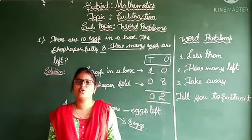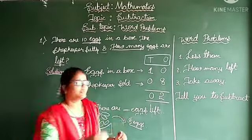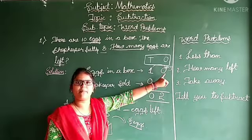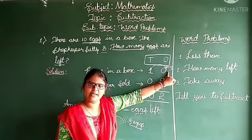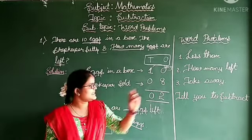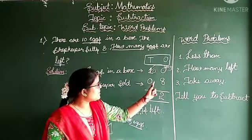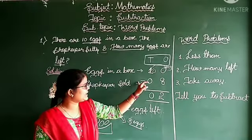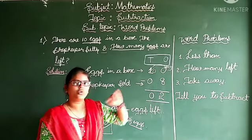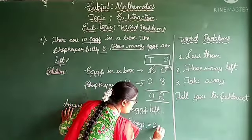You can also solve this using borrowing. 0 minus 8 is impossible, so take a borrow from the 10s place — it becomes 10. 10 minus 8 equals 2. We have written 2 here. Cancel the borrow and write 0. 0 minus 0 is 0. So 10 minus 8 equals 2. Answer: there are 2 eggs left.